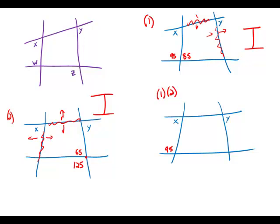This is 95, so this is 85. This is 125, so this is 65. So now notice that what we have here is an irregular quadrilateral.